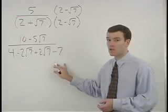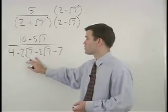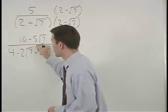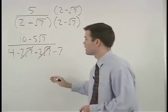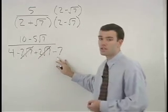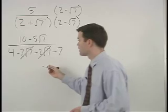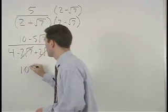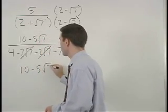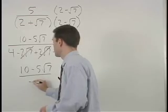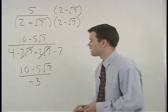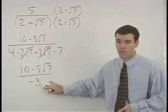So in our denominator, the minus 2 root 7 and plus 2 root 7 cancel each other out. And 4 minus 7 is negative 3. So we have 10 minus 5 root 7 over negative 3. And the radical is gone from the denominator.